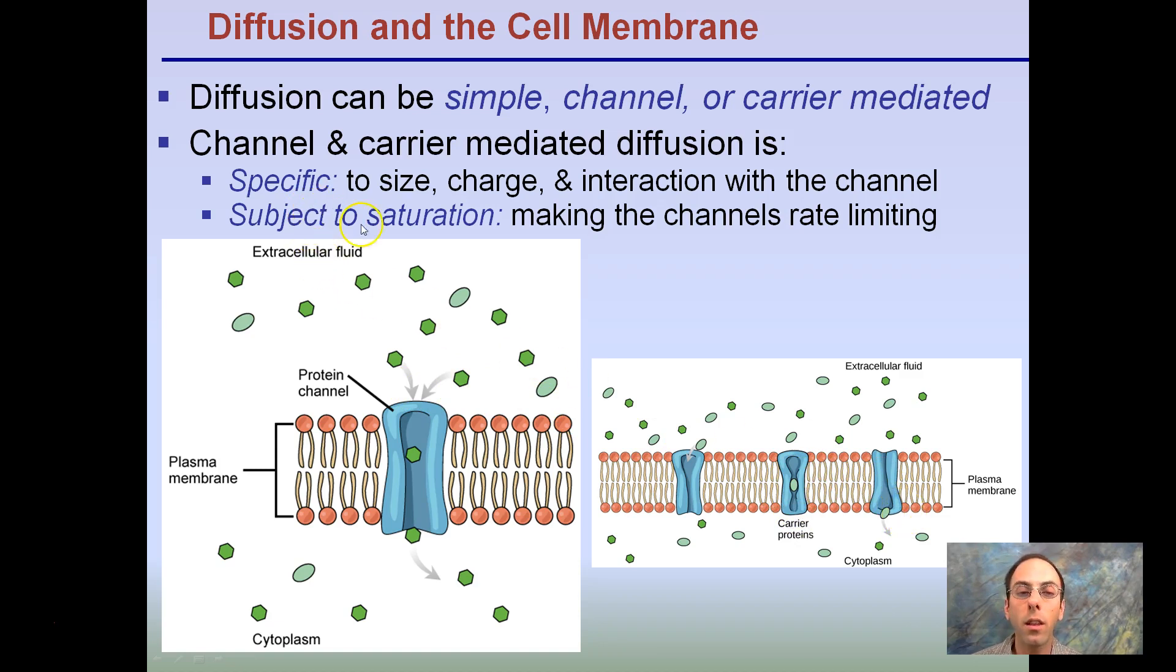What I mean when I say subject to saturation making the channel's rate limiting is if there's only a couple of these proteins in the plasma membrane, it's going to limit and there's only going to be so many that can get through at any one particular time, subject to saturation. If they're all busy doing their job, it's going to be slow to get all those molecules to diffuse across. Here, we're looking at that saturation point. If it's not a lot of solutes, then they can all diffuse quite well.